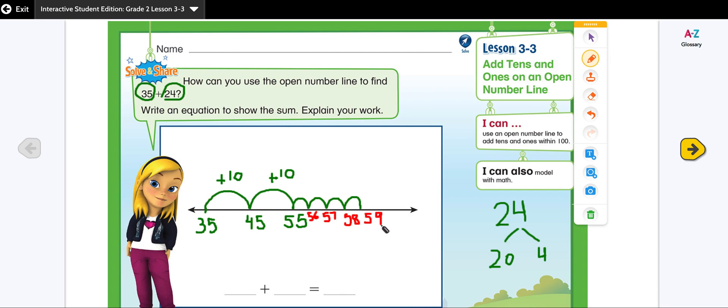So you can see that when I have to add 24 to my addend 35, I started by adding tens on an open number line. First I add ten, it gave me 45. Then I added one more ten, it gave me 55. So now I have added both of my tens.